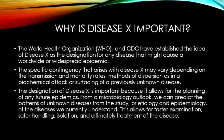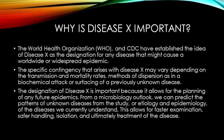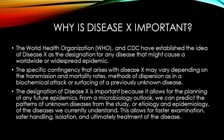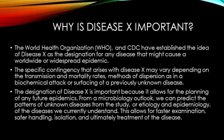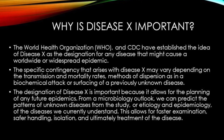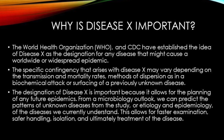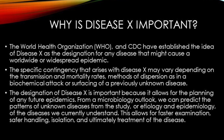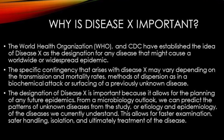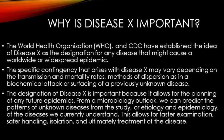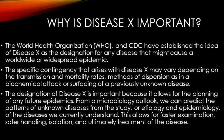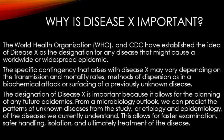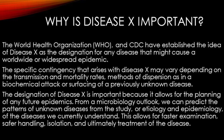Why is Disease X important? The World Health Organization and the CDC have established the idea of Disease X as the designation for any disease that might cause a worldwide or widespread epidemic. The specific contingency that arises with Disease X may vary depending on the transmission and mortality rates, methods of dispersion — as in a biochemical attack or surfacing of a previously unknown disease. The designation of Disease X is important because it allows for the planning of any future epidemics. From a microbiology outlook, we can predict the patterns of unknown diseases from the study of etiology or epidemiology of the diseases we currently understand. This allows for faster examination, safer handling, isolation, and ultimately treatment of the disease.